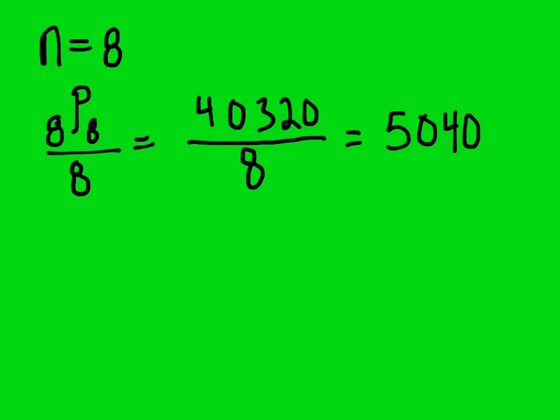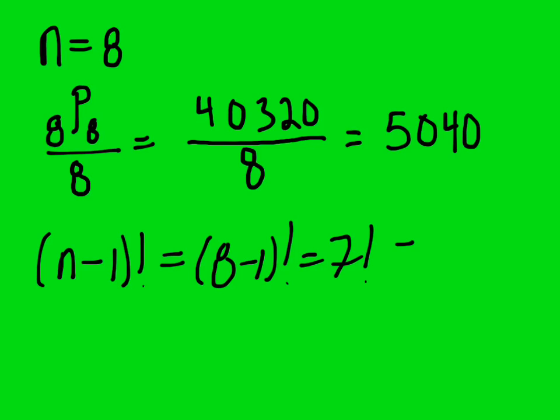So I could have did the same thing if I did N minus one factorial, which is the same as eight minus one factorial, which is seven factorial. So I could just do seven factorial real quick on my calculator. And of course, I get the exact same thing, 5,040.